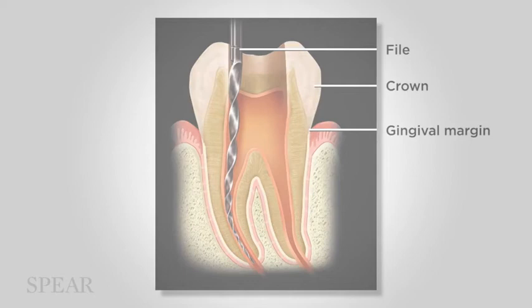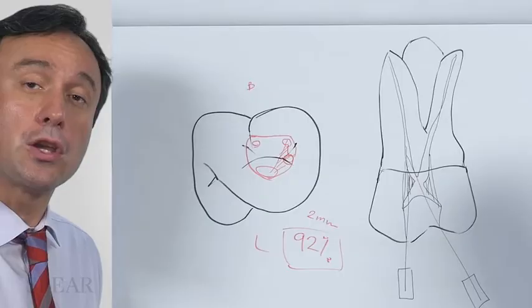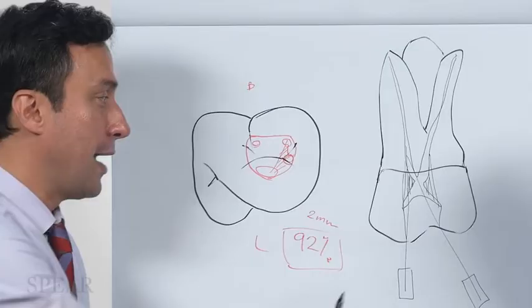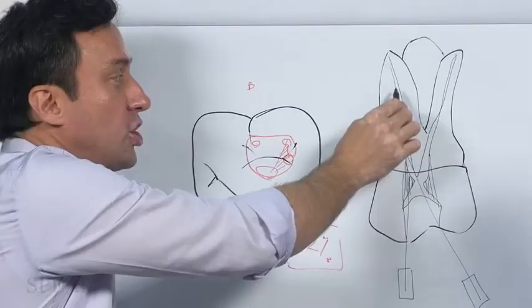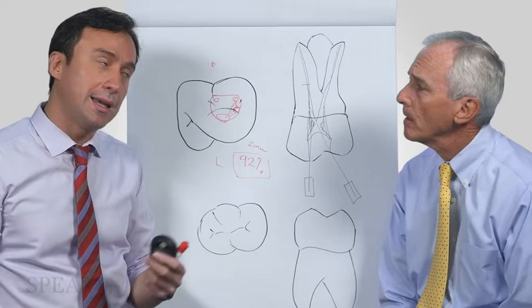If your file is standing at an angle, you need to correct that. You need to be able to put your file in directly and go straight. Remember the concept: straight line access to the mid root portion of the tooth. This way, it'll have a chance to negotiate any kind of curvature the tooth may take unexpectedly in the apical half of the root.